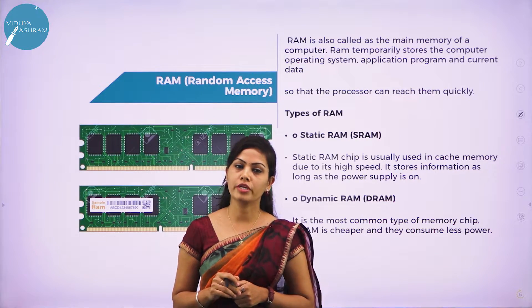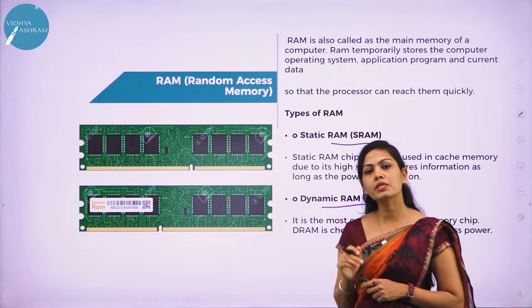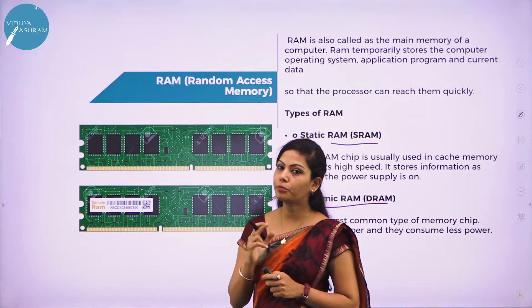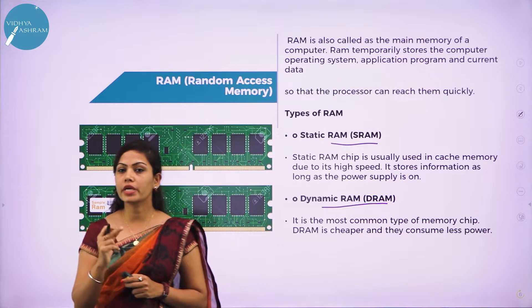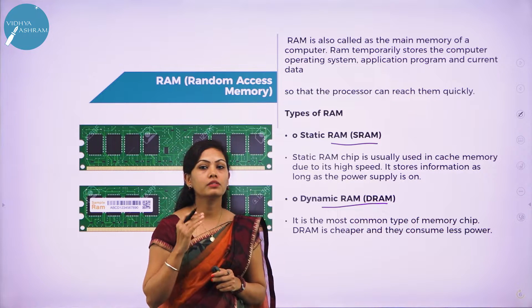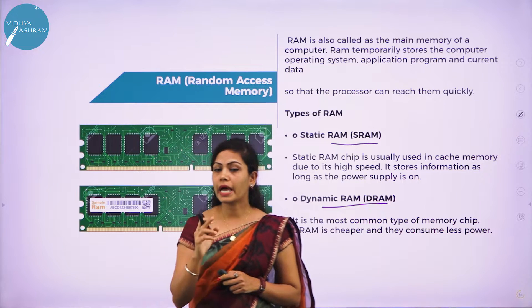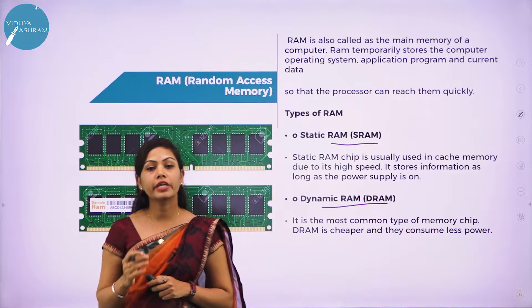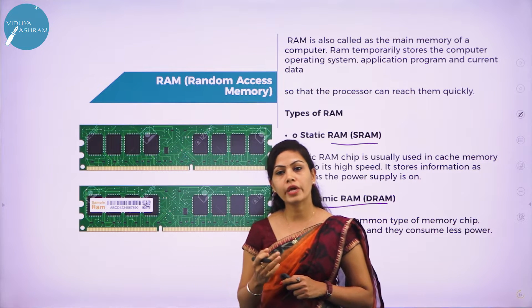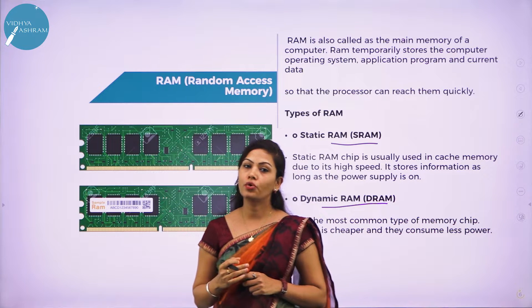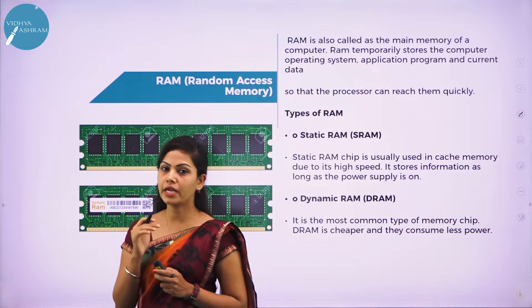RAM stands for random access memory. RAM is generally known as the main memory of the computer system. It is called temporary memory — the information stored in this type of memory is lost when the power supply is switched off, so RAM is volatile memory. You can read and store data randomly at any time and from any physical location. The types of RAM are SRAM, DRAM, SDRAM, and DDR SDRAM.